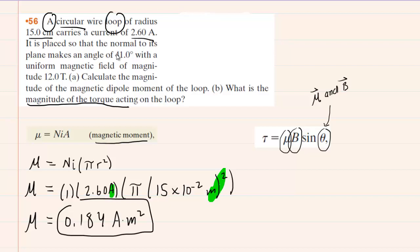It's important to note that this angle must be measured between the magnetic moment vector and the magnetic field vector. Now, in this case, the angle is straightforward. It is given to us. It says that the loop's normal makes an angle of 41 degrees with a uniform magnetic field. The normal is actually the direction of mu, so basically the question is telling you that mu makes an angle of 41 degrees with the magnetic field. So that means theta is 41.